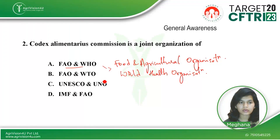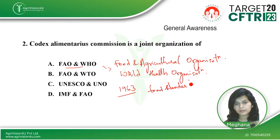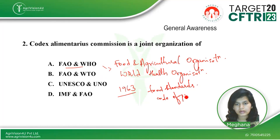The Codex Alimentarius Commission is a joint organization of the Food and Agriculture Organization and the World Health Organization. It was set up in 1963 in order to set food standards, codes of practice, and guidance for food regulation.